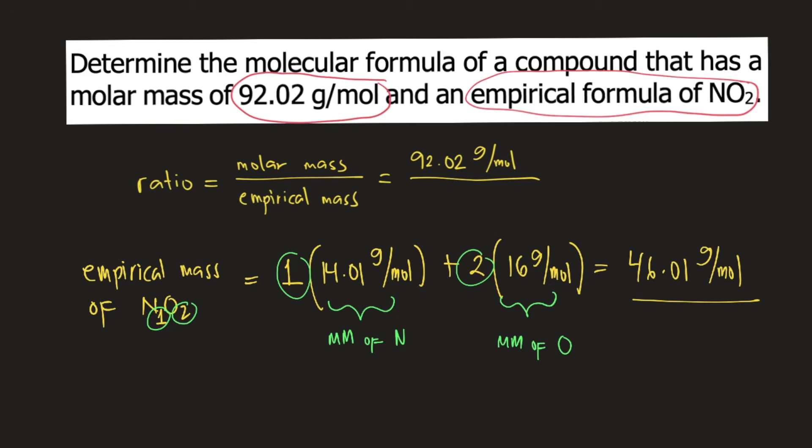You plug that into the formula, divided by 46.01 grams per mole, and solve for the ratio. So 92.02 divided by 46.01, that is equal to 2.